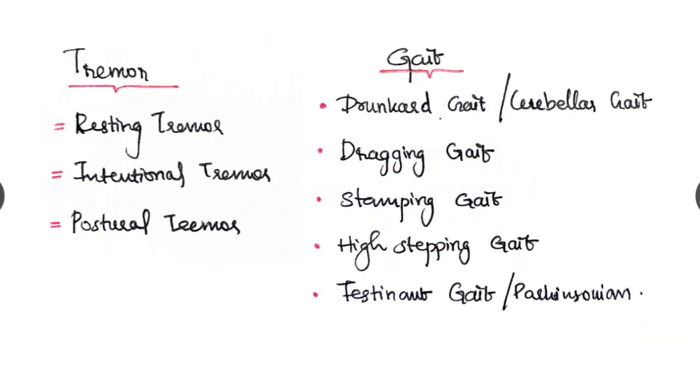Few words about tremor. It can be resting tremor, intentional tremor, postural tremor which are seen in Parkinson's disease. Gait is also very important. We have to learn in detail the types of gait. And the most important gaits: drunkard gait or cerebellar gait, dragging gait, stamping gait, high-stepping gait, festinant gait, Parkinsonian gait. Some examiners will ask us to demonstrate a particular gait of such and such lesion.